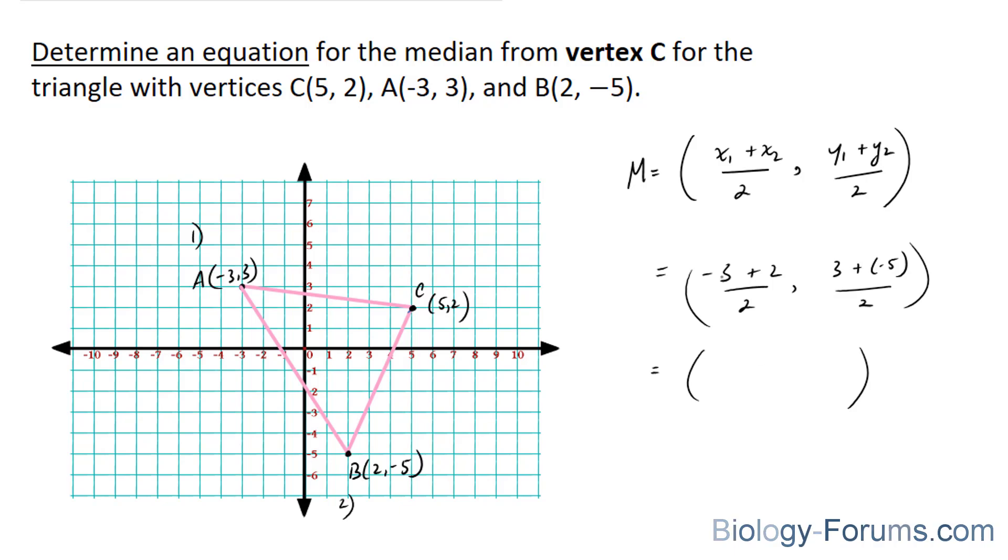Start with the x coordinate. Negative 3 plus 2 is negative 1 over 2. And over here, 3 plus negative 5 is equal to negative 2. Divided by 2 is negative 1.